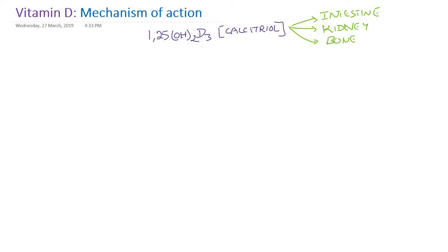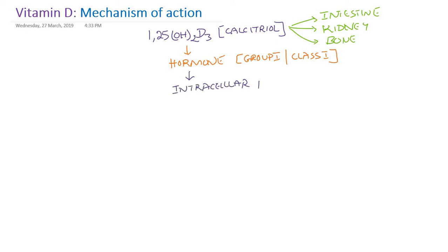Vitamin D is also called a hormone, and this hormone belongs to group 1 or class 1 hormones. We know that group 1 or class 1 hormones have a receptor inside the cell — either in the cytoplasm or in the nucleus. So the vitamin D receptor is an intracellular receptor. Particularly for vitamin D, the receptor is located in the nucleus, and it is called the vitamin D receptor (VDR).